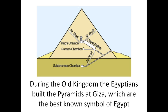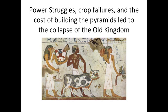If you look at the diagram here, you'll see just how detailed these pyramids were. But building the pyramids was costly, and this cost, along with power struggles and crop failures, led to the collapse of the Old Kingdom. After over a century of disunity, new pharaohs reunited the land, which led to the beginning of the Middle Kingdom.